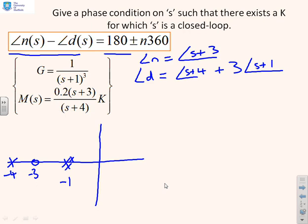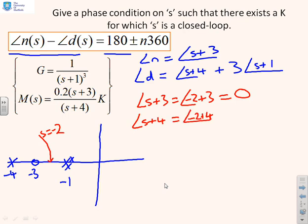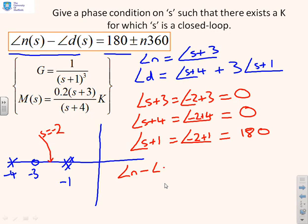In this particular case, I'm going to try a particular value of s equal to minus 2 and ask: is s minus 2 a possible closed loop pole? Let's plug it in and see what we get. The argument of (s plus 3) becomes the argument of minus 2 plus 3, which is zero. The argument of (s plus 4) becomes the argument of minus 2 plus 4, which is zero. The argument of (s plus 1) becomes the argument of minus 2 plus 1, which is 180. So now, if I put all this together, arg n minus arg d equals 0 minus 0 minus 3 times 180, which meets our criteria, so therefore I am on the loci.